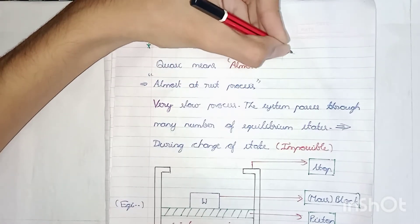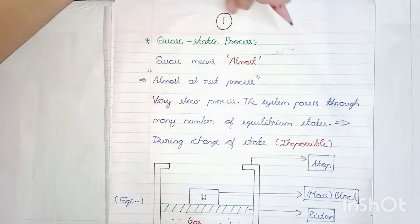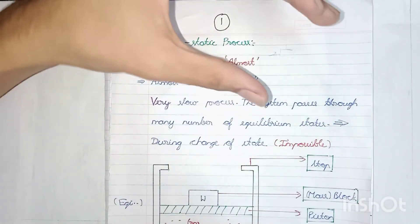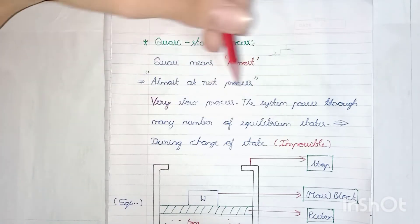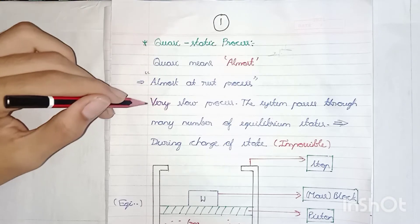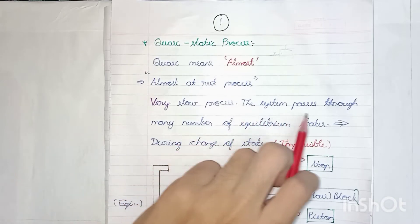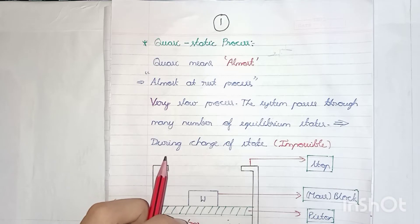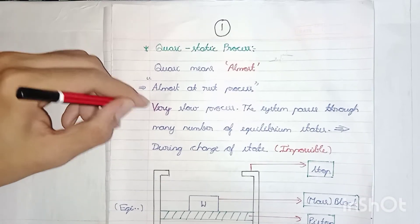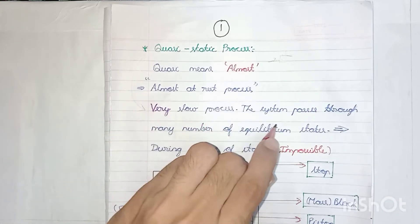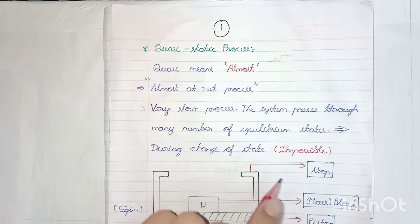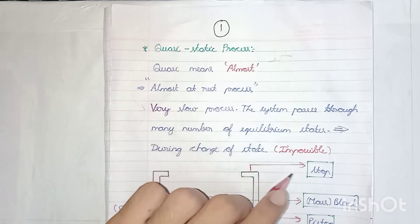When an object is at rest and slowly moves, if you observe from far you can see it appears at rest, but when you go near and observe you will see it is moving. So from this you can understand that this process is a very slow process in which the system passes through many number of equilibrium states during change of state. This is the definition. Also keep in mind: this is an impossible process.